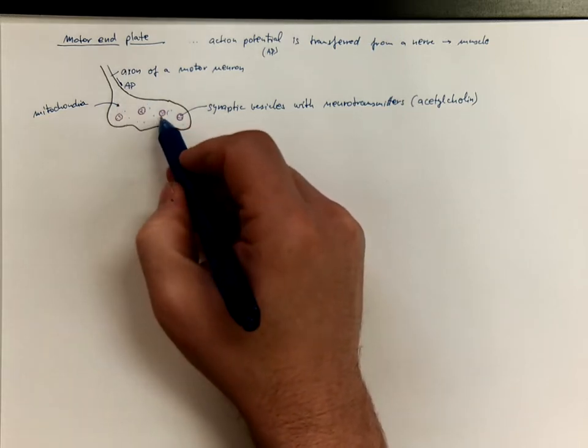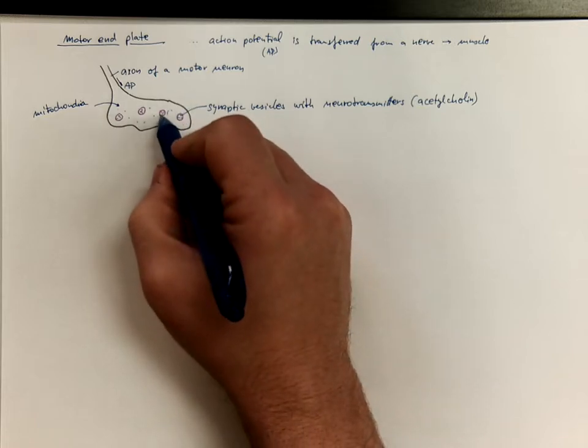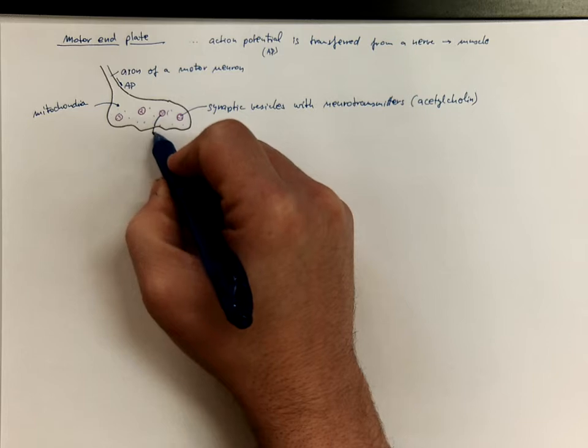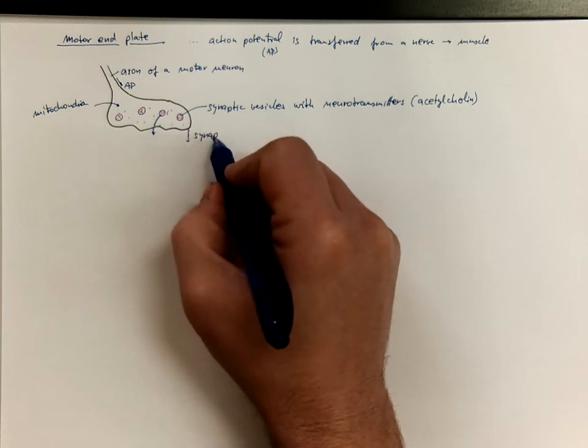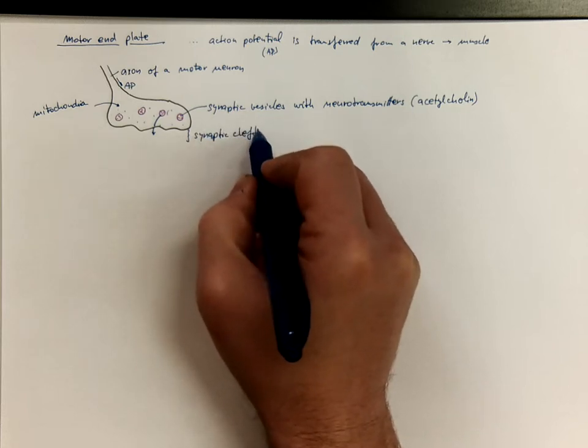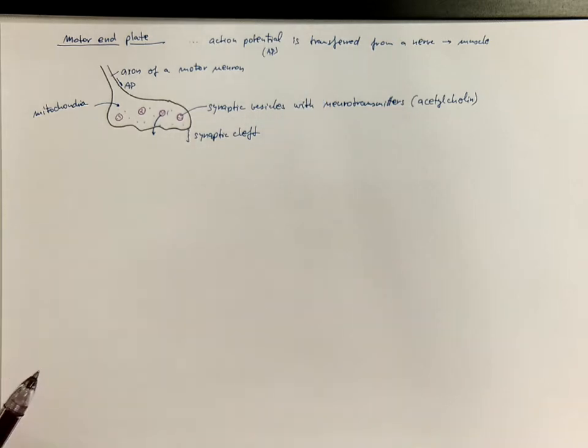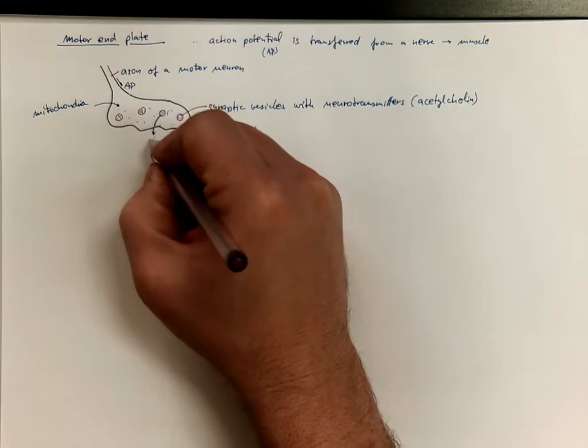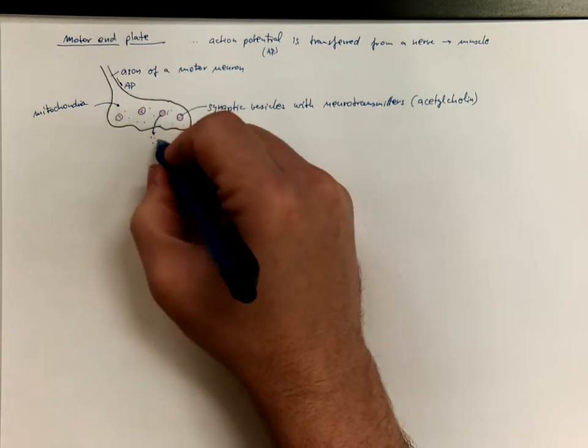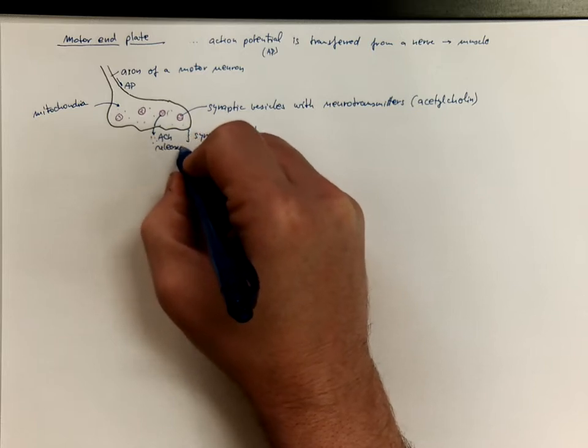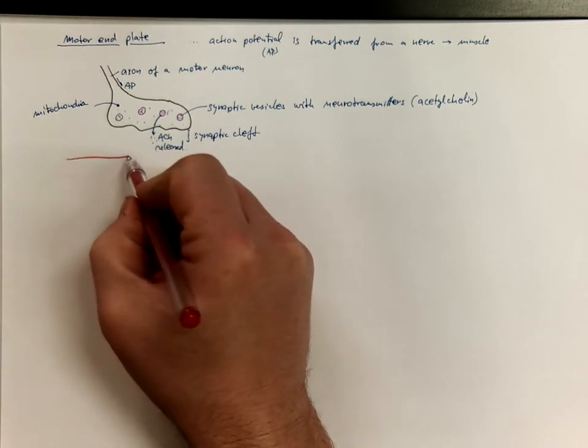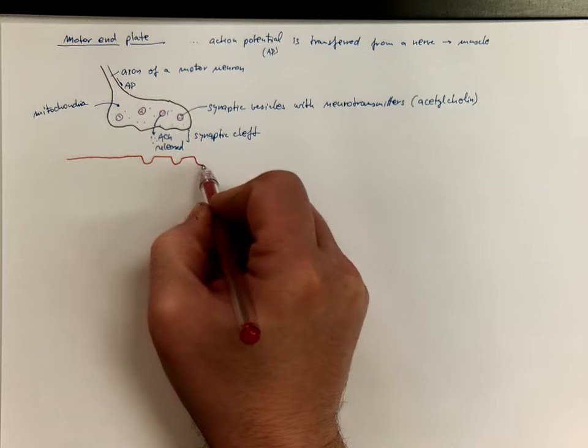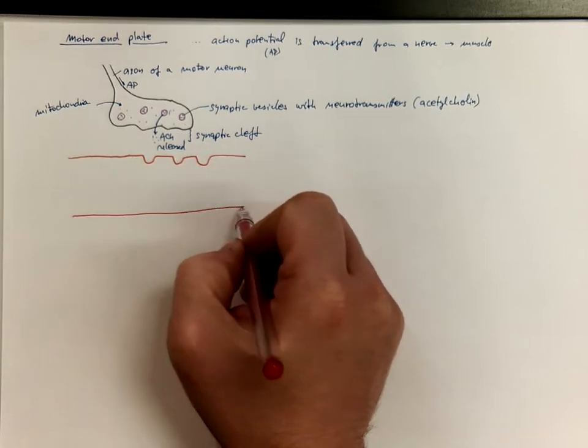The action potential triggers release of the neurotransmitter outside into a space called the synaptic cleft. So the acetylcholine is released and it binds the receptors that are on the surface of the muscle fiber.